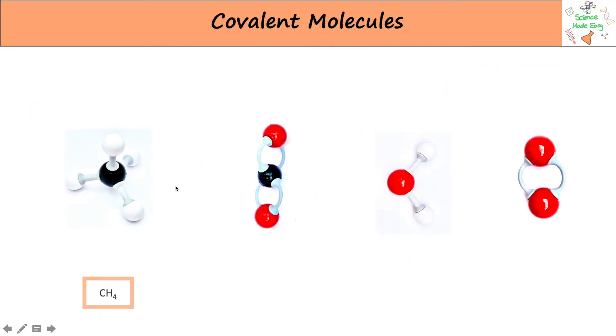Here are some covalent molecules. We have methane, which is CH4. It's made up of one carbon atom bonded to four hydrogen atoms. We then have carbon dioxide, which is CO2. It's one carbon atom bonded to two oxygen atoms.